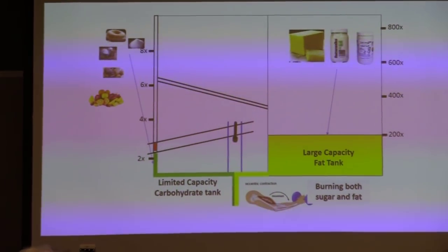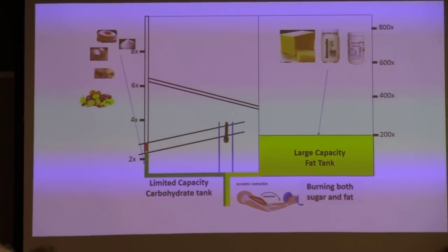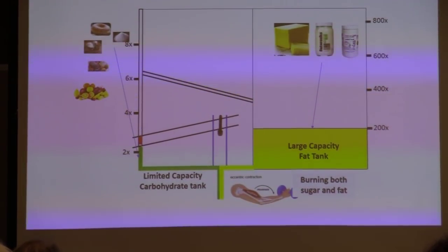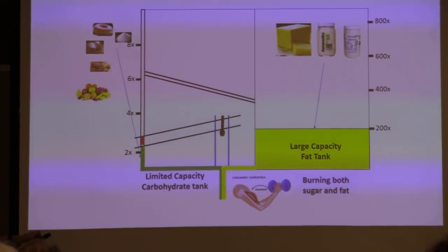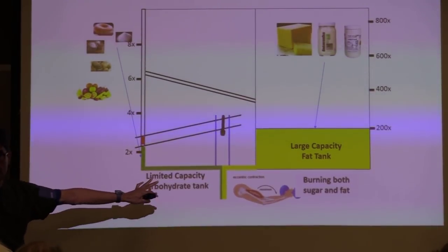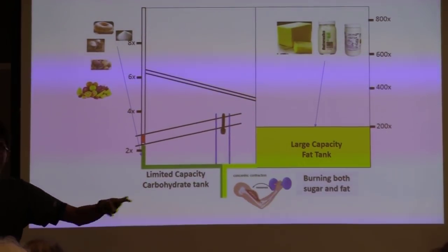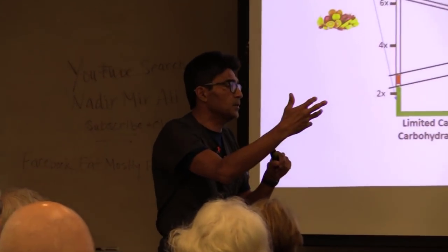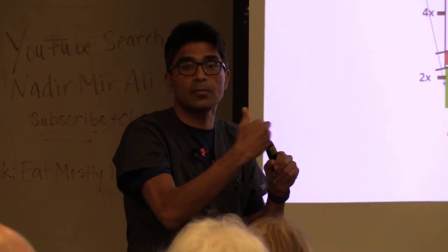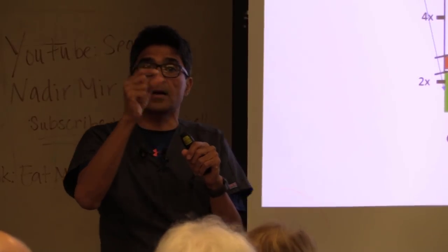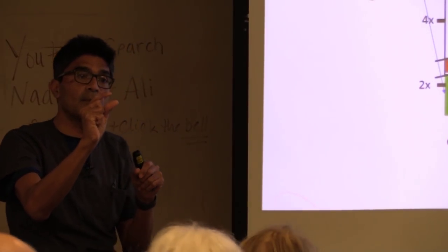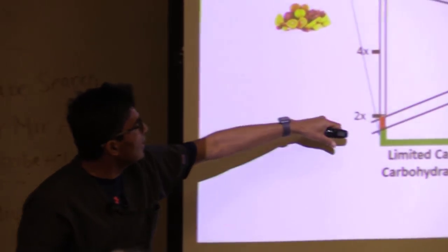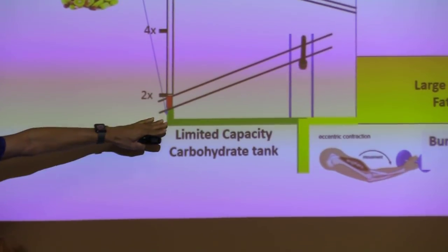This is very important: think of a fat tank versus a carbohydrate tank. Our body's fat tank is 200 times bigger than the carbohydrate tank — we can store only about 100 grams of carbohydrates. As you reduce your carbohydrates...